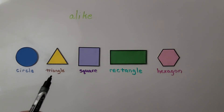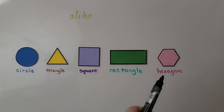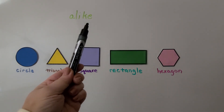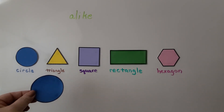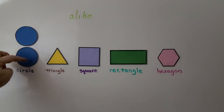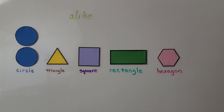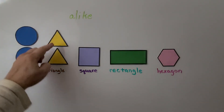So we have a circle, a triangle, a square, a rectangle, and a hexagon. This is the word alike. When things are alike, it means they have things in common — they could look the same or have the same parts. These two shapes are alike; they look like each other. And this triangle and this triangle — these two are alike.